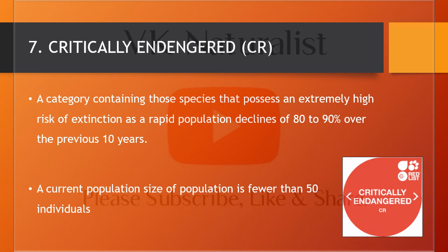Number seven is Critically Endangered, or CR. In this category, those species are placed which are at extremely high risk of extinction, with a rapid declination in population that has been reduced by 80 to 90 percent over ten years, and whose current population is fewer than 50 individuals.